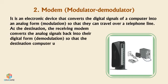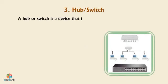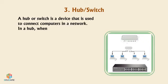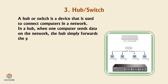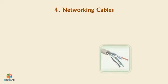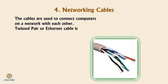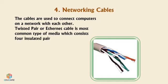Hub or Switch: A hub or switch is a device used to connect computers in a network. In a hub, when one computer sends data on the network, the hub simply forwards the packets to all other computers connected to it. Networking Cables: Cables are used to connect computers on a network. Twisted pair or Ethernet cable is the most common type of media, consisting of four insulated pairs of wires twisted around each other.